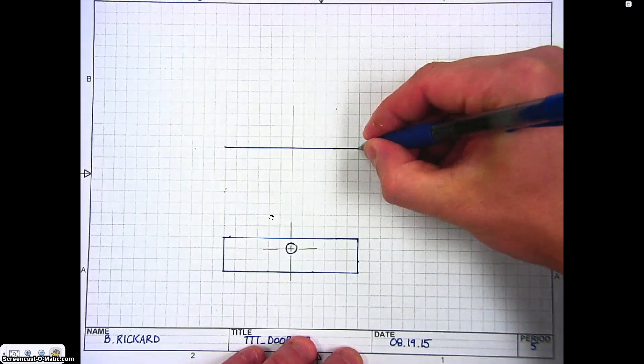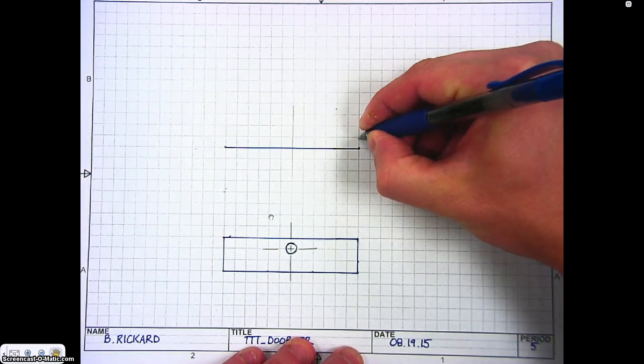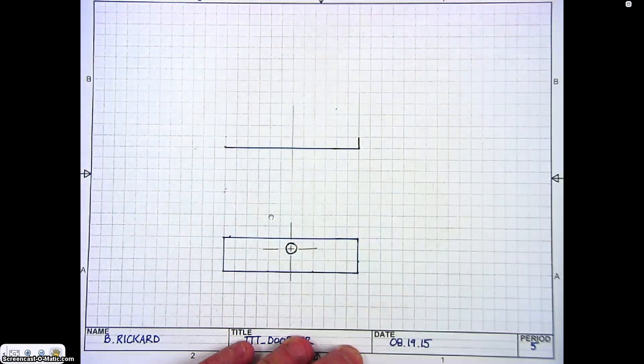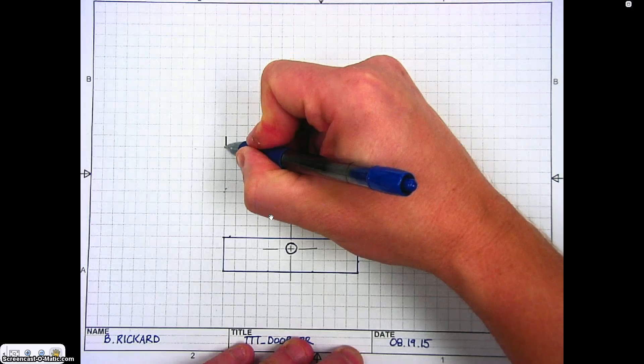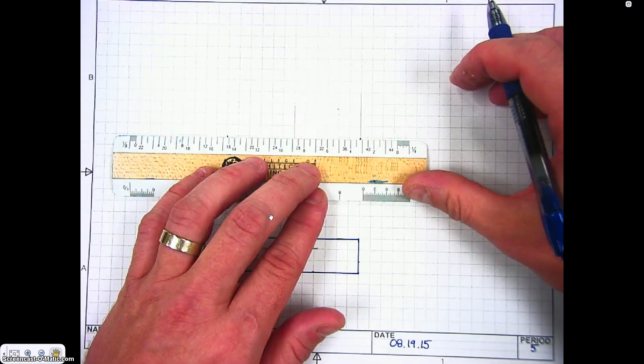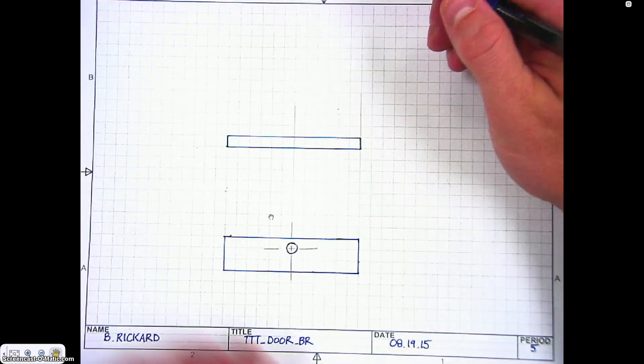This dimension in the top view is called height—or excuse me, depth. I'll go ahead and sketch that in. It's a quarter inch, so that's just one box on our paper. Then I'll sketch in the back line to finish out the overall shape of that view.